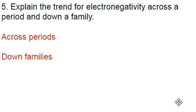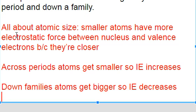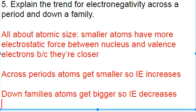Objective five says explain the trend for electronegativity across a period and down a family. This is going to be a whole lot like number three, ionization energy. It's all about atomic size — atoms get smaller as we go across and bigger as we go down.